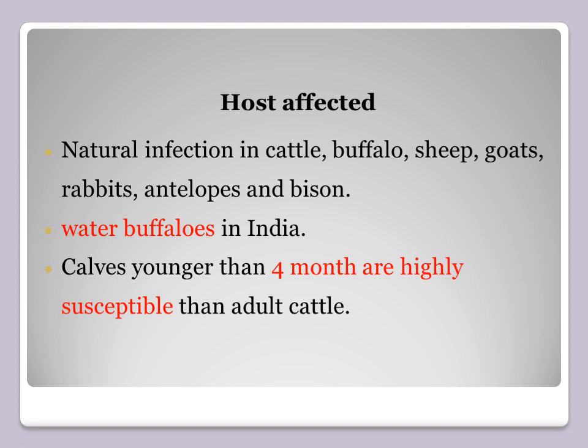Hosts affected: natural infection occurs in cattle, buffalo, sheep, goat, rabbit, antelope, and ambition. The disease is present in great numbers in water buffaloes in India. Calves younger than four months are highly susceptible compared to adult cattle, so most infections occur in young animals below four months of age.